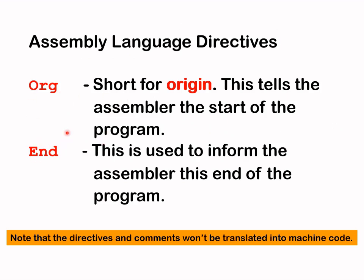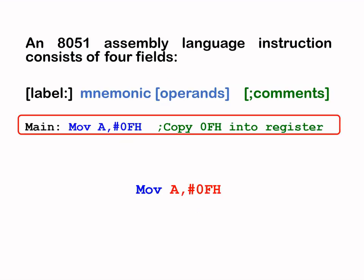ORG and END are what we call assembly language directives. ORG is short for 'origin' and tells the assembler the start of the program. END informs the assembler that this is the end of the program. Notice that directives and comments are not translated into machine code. Each 8051 assembly language instruction consists of four fields: label, mnemonic, operands, and comments.